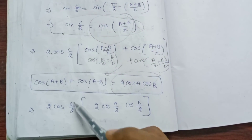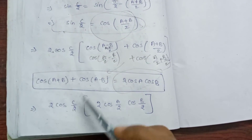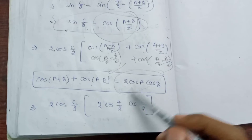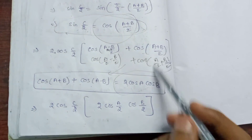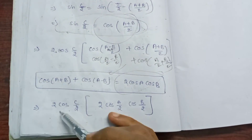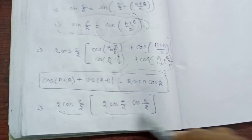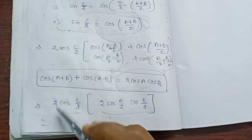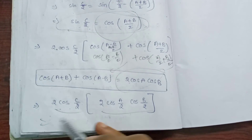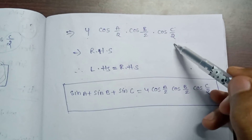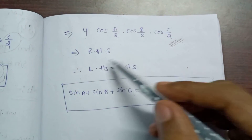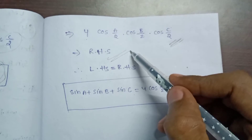So the expression becomes 2·cos(C/2) times 2·cos(A/2)·cos(B/2), which equals 4·cos(A/2)·cos(B/2)·cos(C/2). This is equal to RHS.